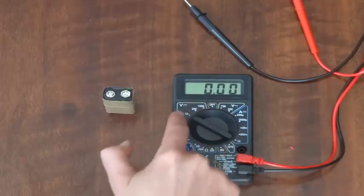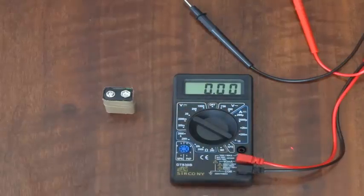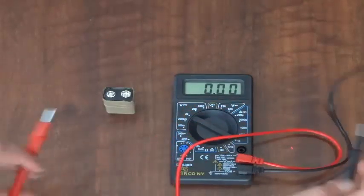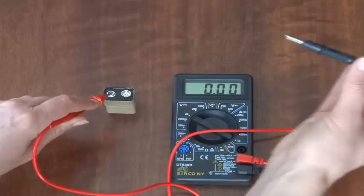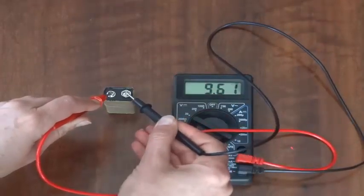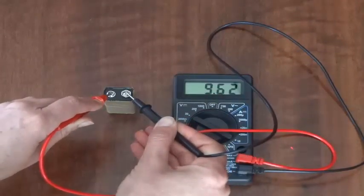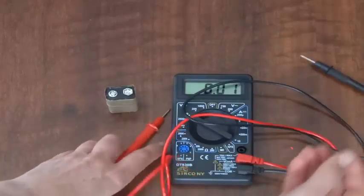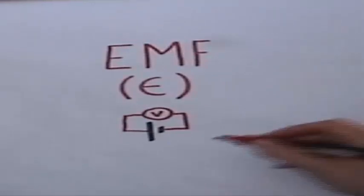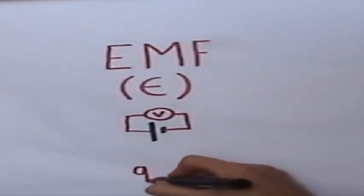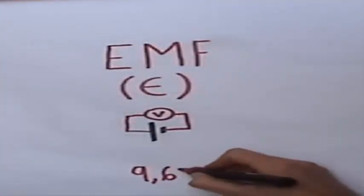So we place our multimeter as a voltmeter. Notice that I turned that to the voltage 20 setting. I place the positive probe onto the positive terminal of the cell and the negative probe onto the negative terminal and I get a reading of 9.62 volts. The EMF of this particular battery is 9.62 volts.